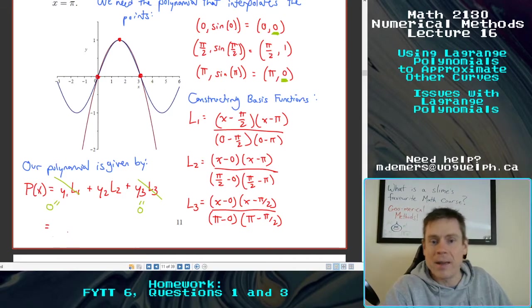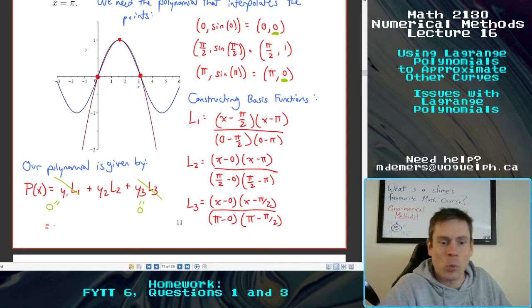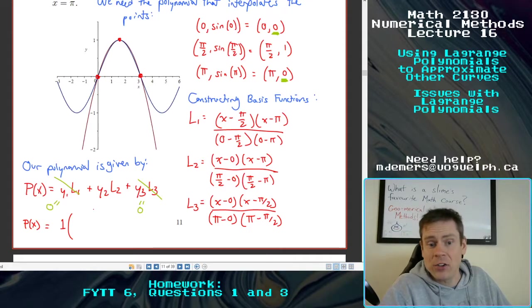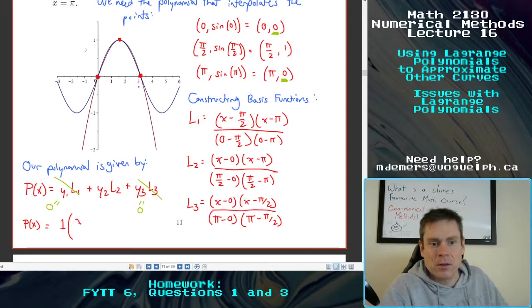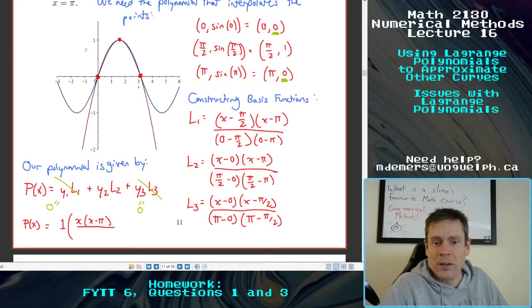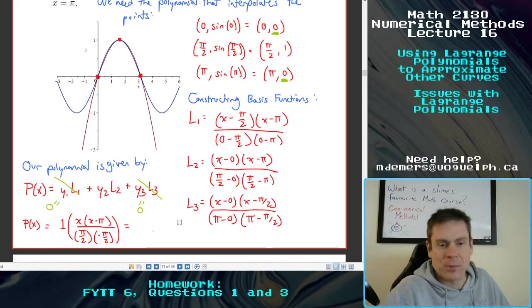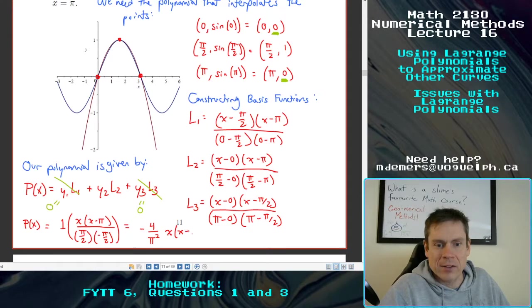So it's going to be given by the second y value, which was one, times L2. If I simplify that down, it looks like we have x(x - pi), and on the bottom it looks like we have pi/2 times minus pi/2. And you could flip this around a little bit. It looks like we're going to get like a 4 over pi squared or something like that with a minus sign. So if we simplify that, we get -4/pi² * x(x - pi).